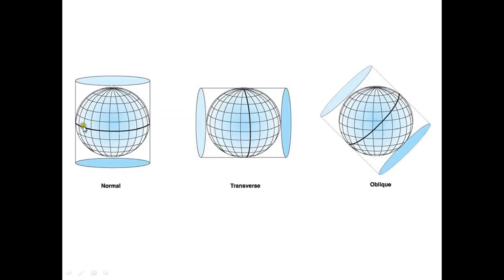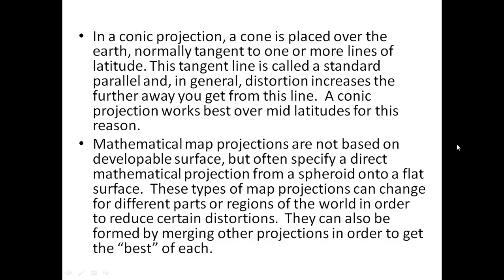Looking at the image: if the whole Earth is put into the cylinder and the Earth's axis is almost parallel to the cylinder, it is called the normal cylinder projection. If the Earth's axis is perpendicular to the cylinder, it is called the transverse projection. If it is oblique, it is called the oblique cylinder projection system.